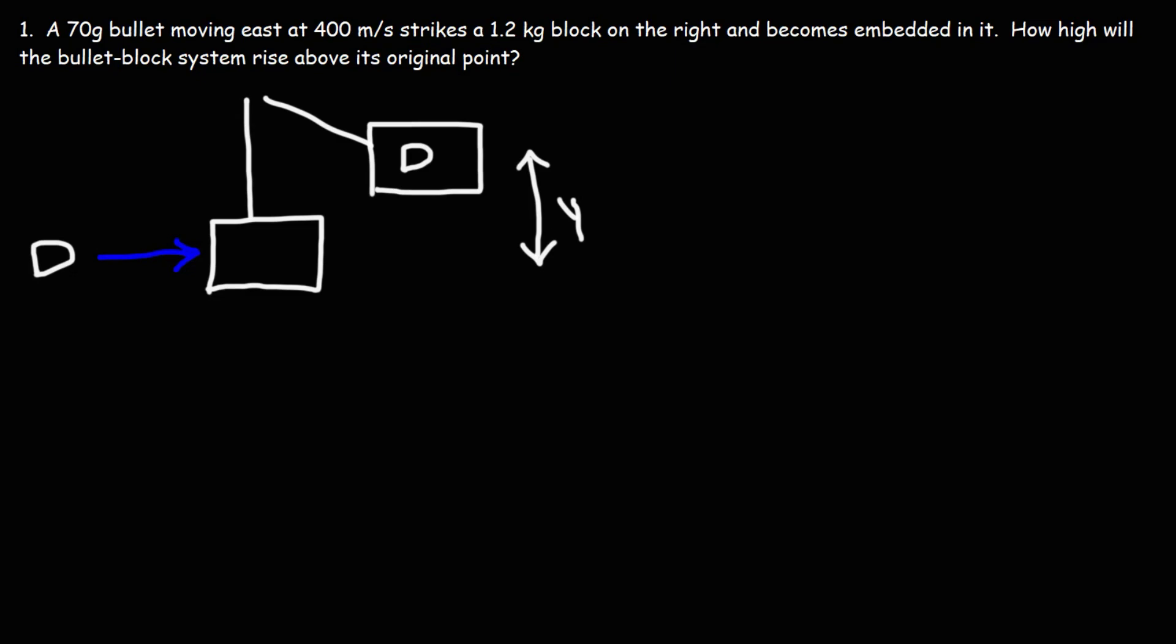In today's lesson, I want to show you a simple formula that can help you solve this ballistic pendulum problem. We have a 70 gram bullet moving east at 400 meters per second, and it strikes a 1.2 kilogram block on the right and becomes embedded in it. Now, how high will the bullet-block system rise above its original point?